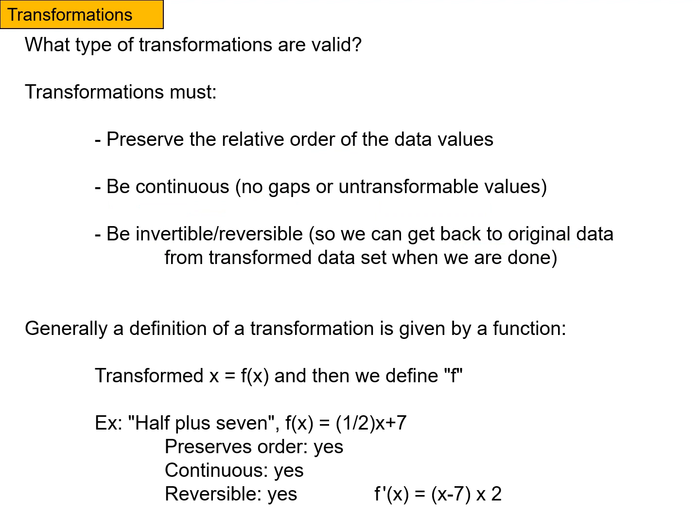Generally, a definition of a transformation is given by a function. So the transformed value of X is f(x), and then we define what f is. For example, we can imagine a transformation half plus seven. F(x) is one half of x plus seven.